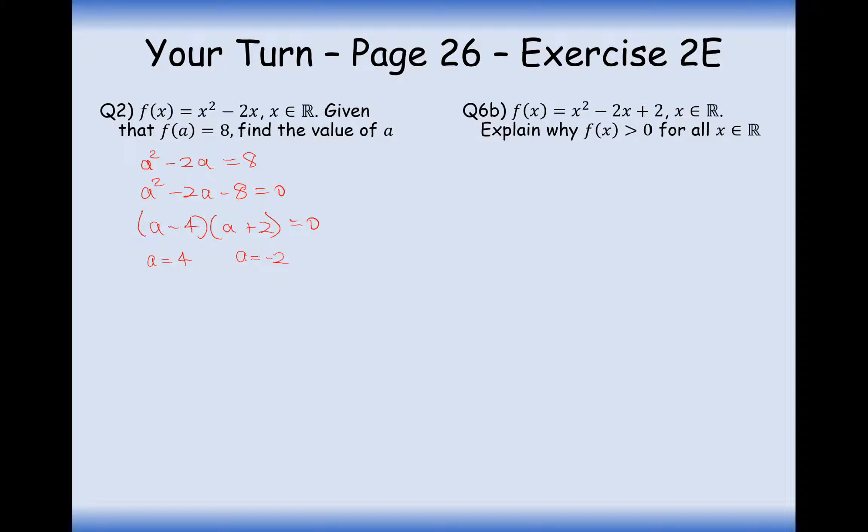For part 6b here, I've chosen 6b because it's a very typical question that will appear on an exam. f of x equals x squared minus 2x plus 2. Explain why f of x is greater than 0. So the way that we're going to do this is we're going to complete the square, and then hopefully we're going to have a square component plus maybe a positive number, and that will definitely then be greater than 0.